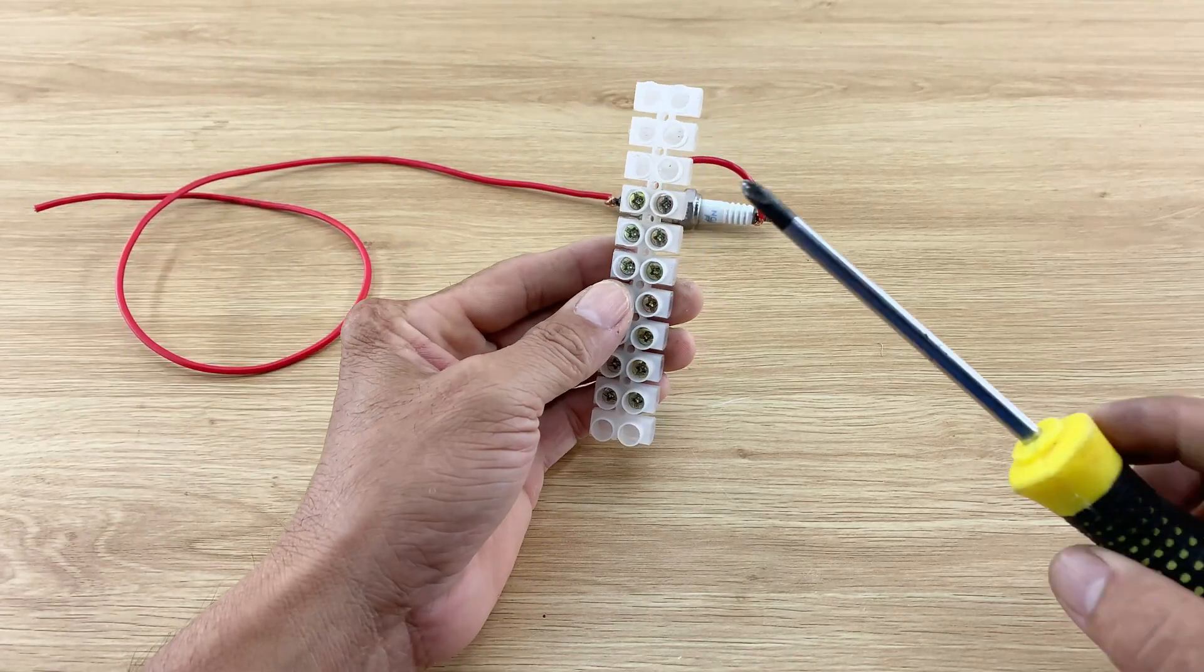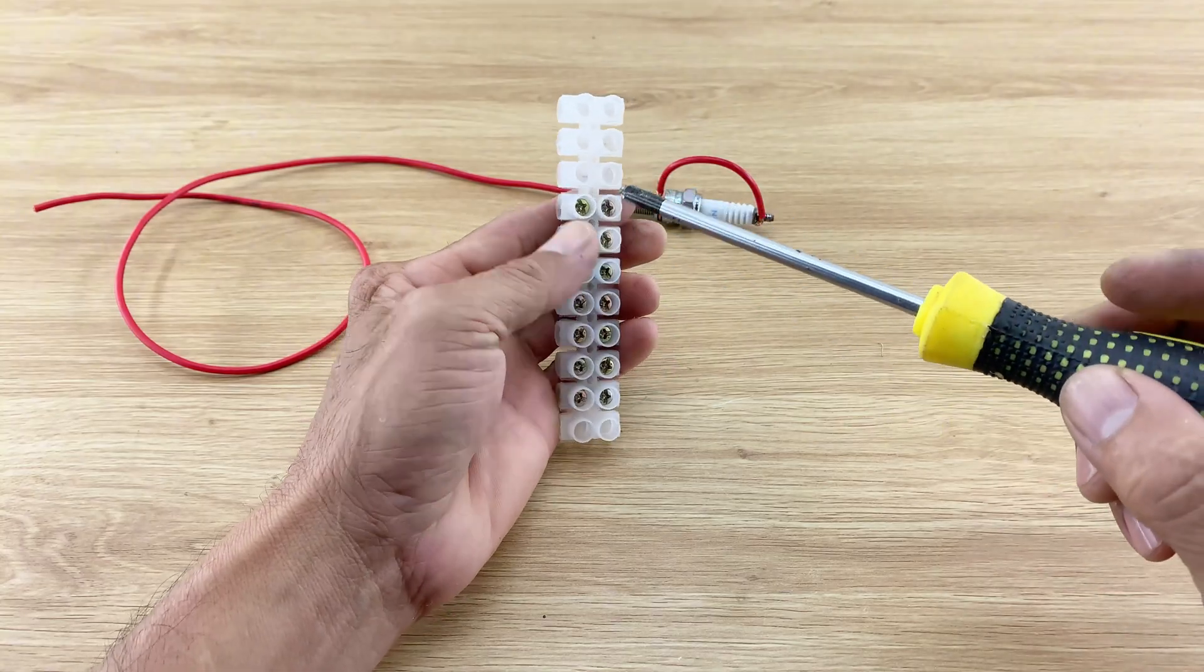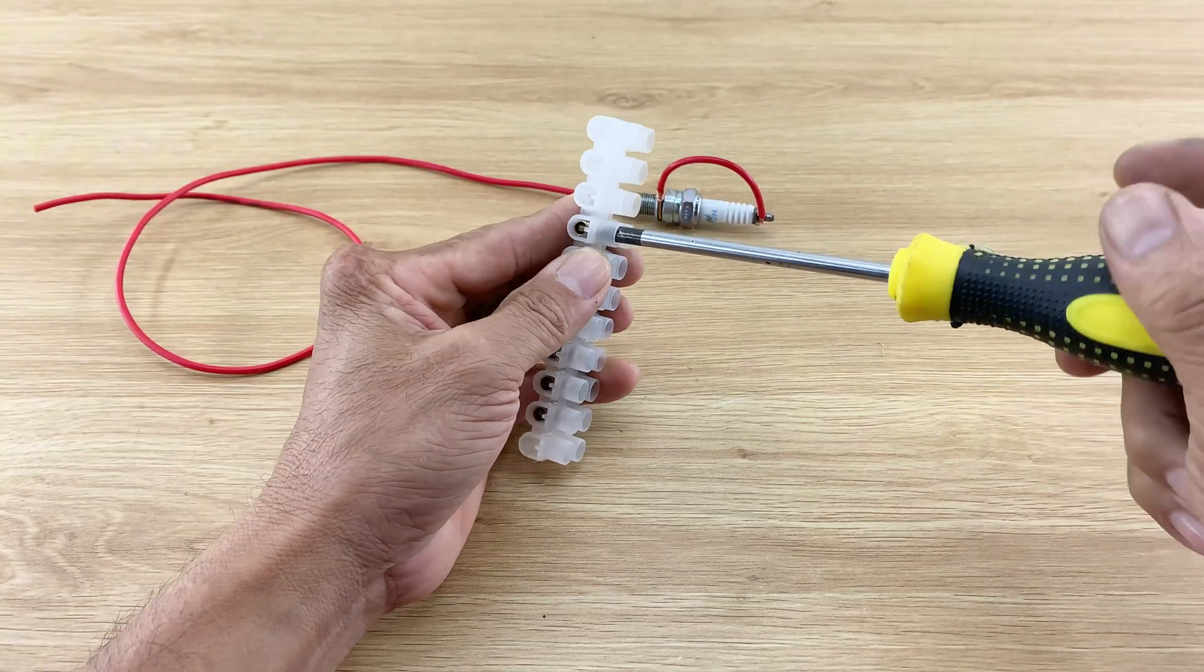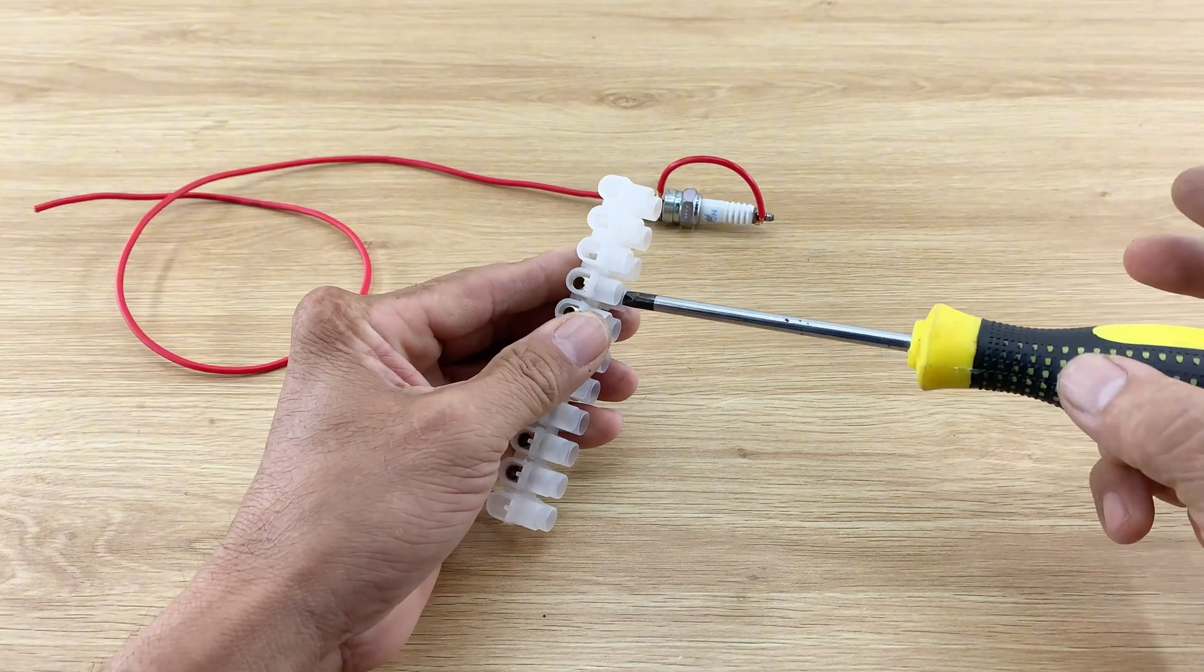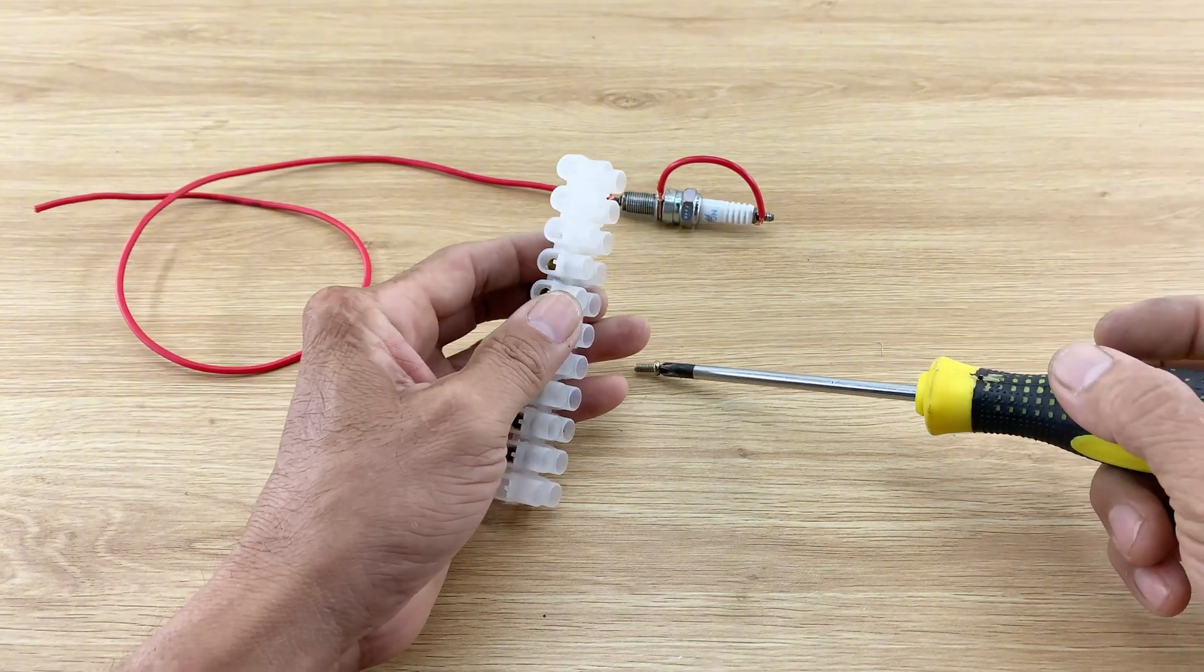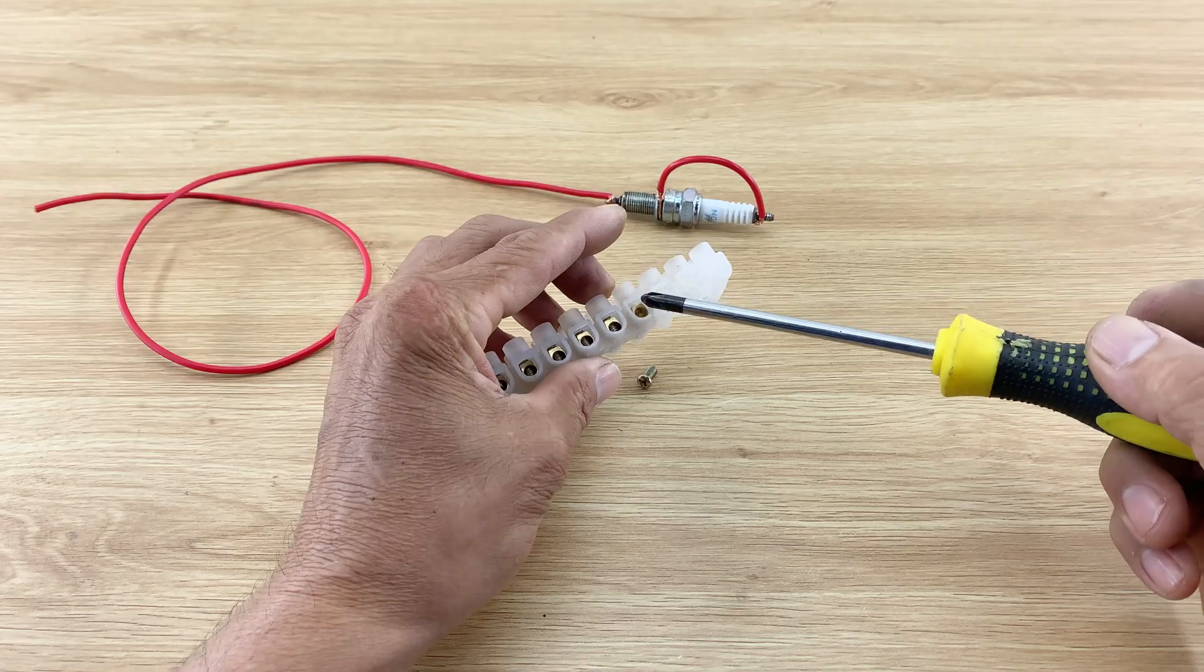Next, I take a terminal block and use a screwdriver to loosen the screws. These small brass connectors inside are perfect for our project. I carefully remove this brass connector as they will be essential for making secure electrical connections.